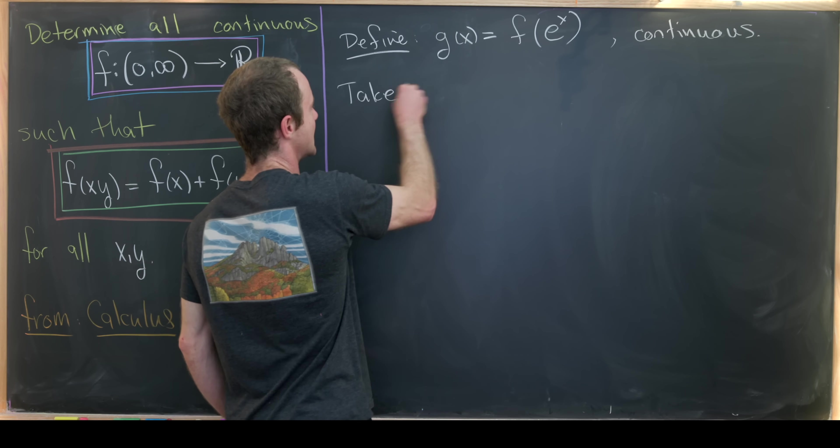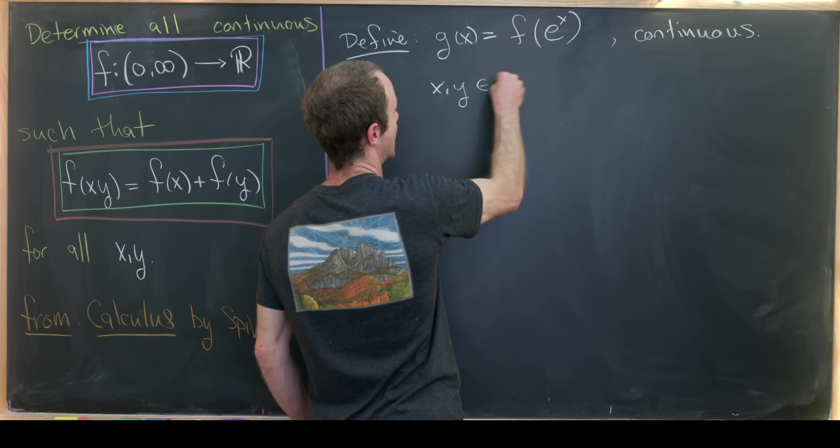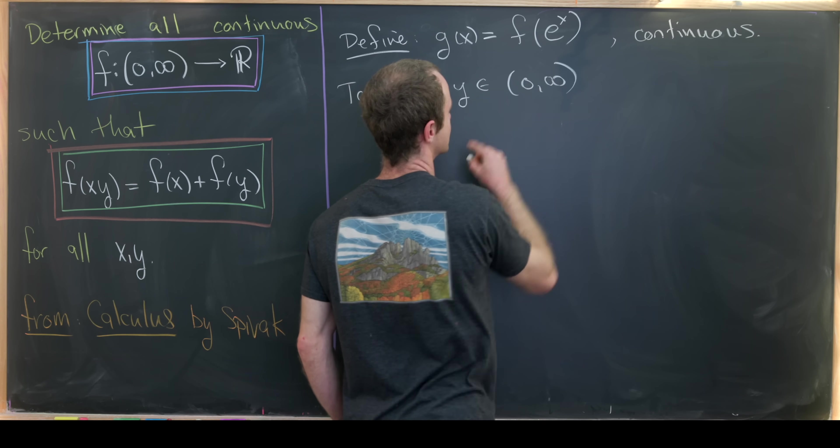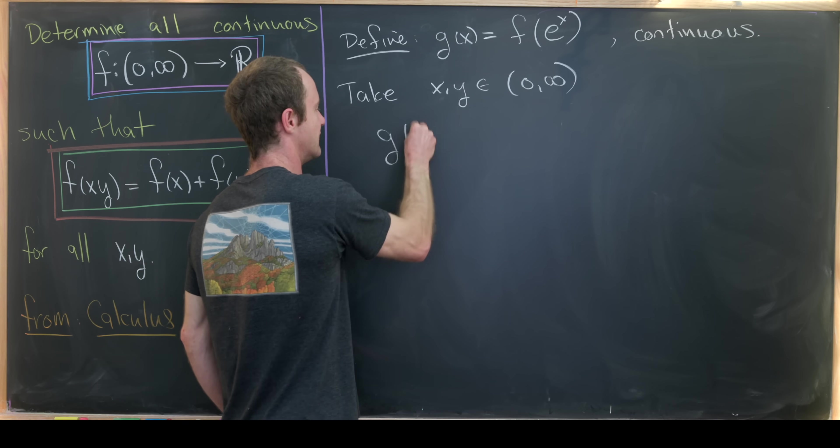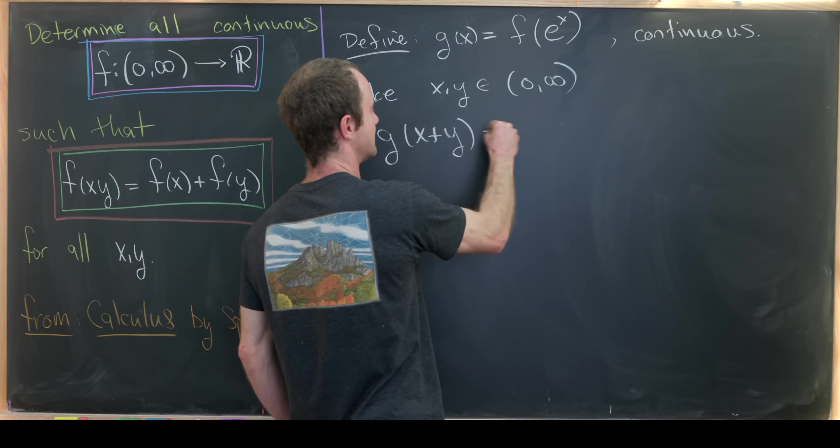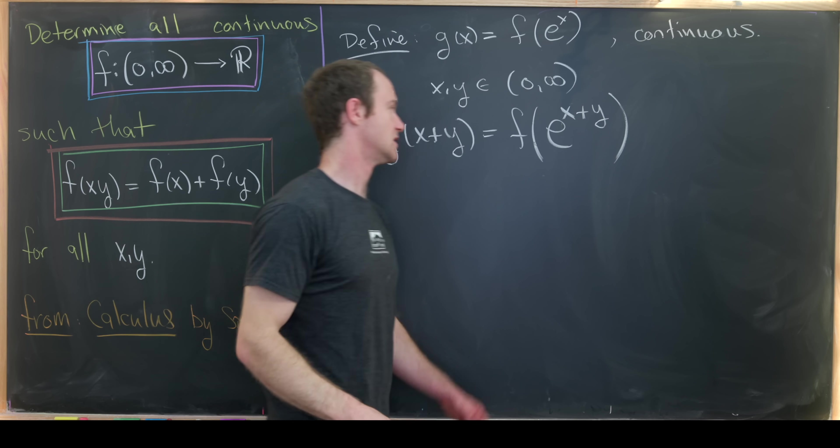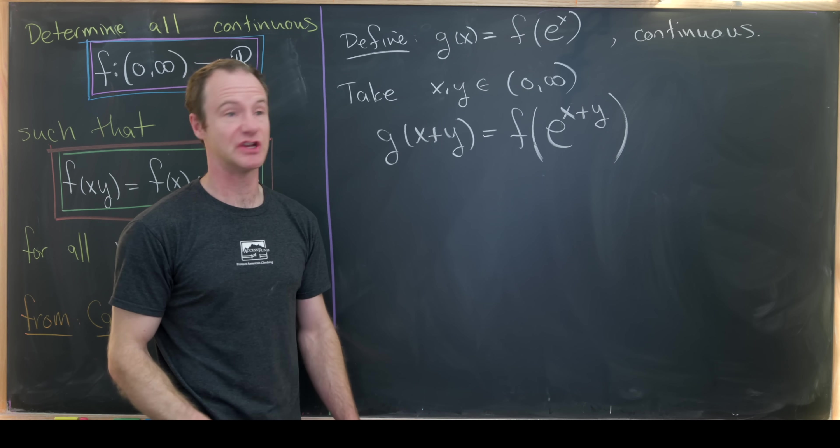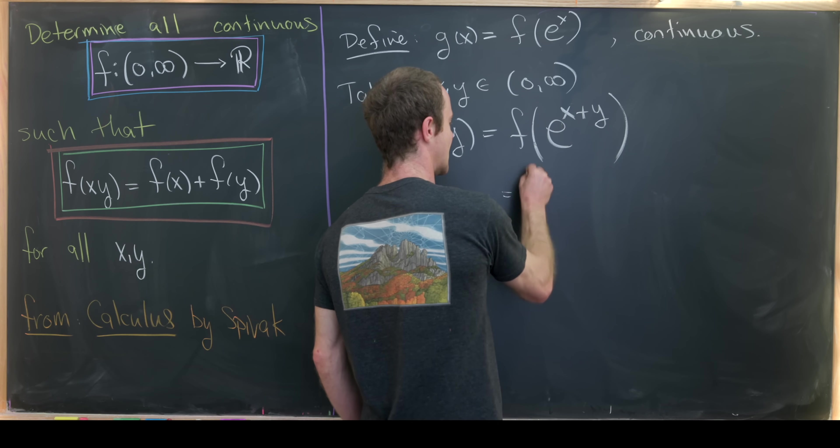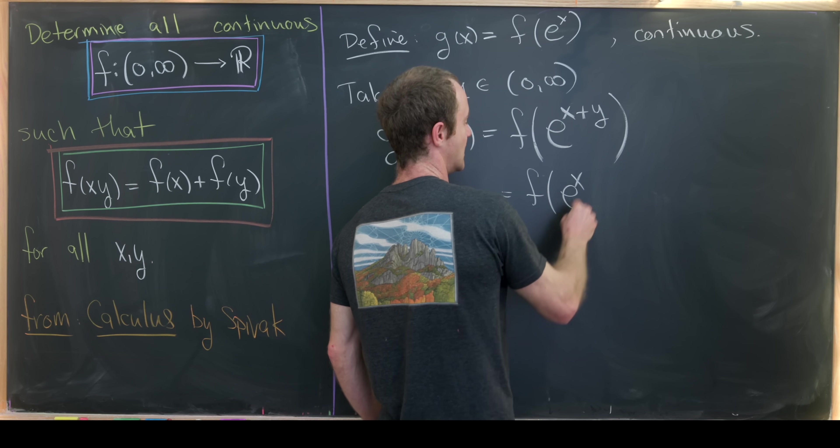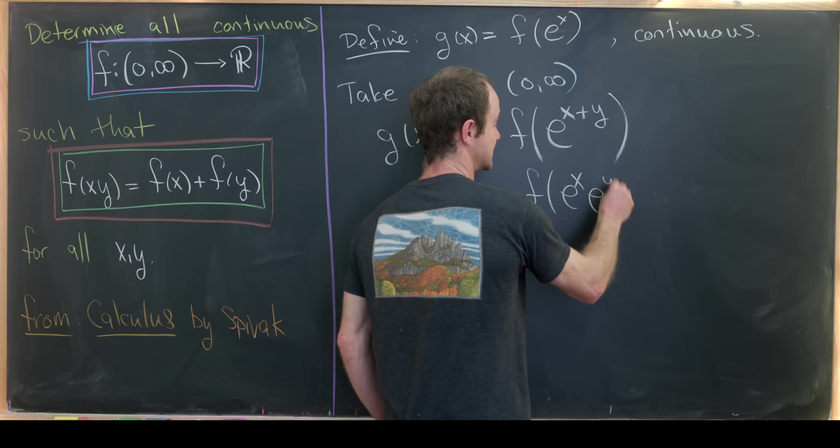Let's take x and y in the positive real numbers and then look at g(x+y). So that's going to be equal to f(e^(x+y)). Just by our definition of g(x). But using exponent rules that's f(e^x times e^y).